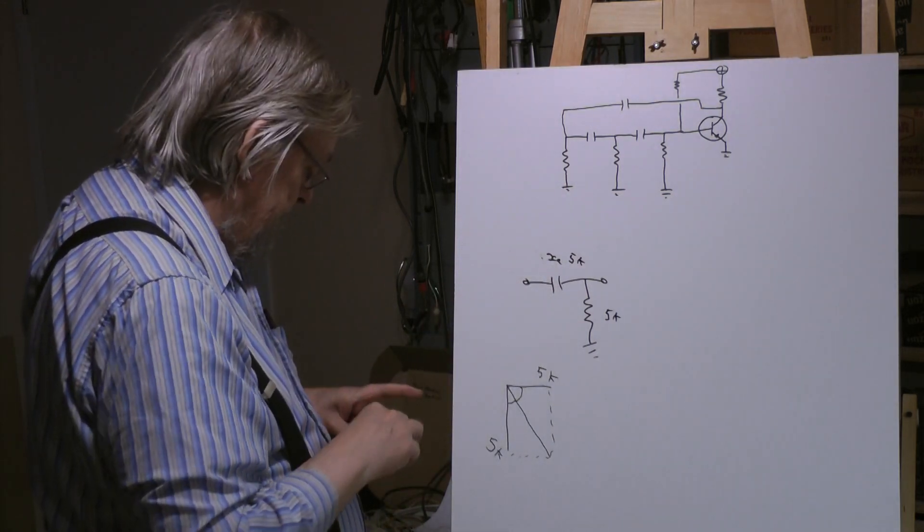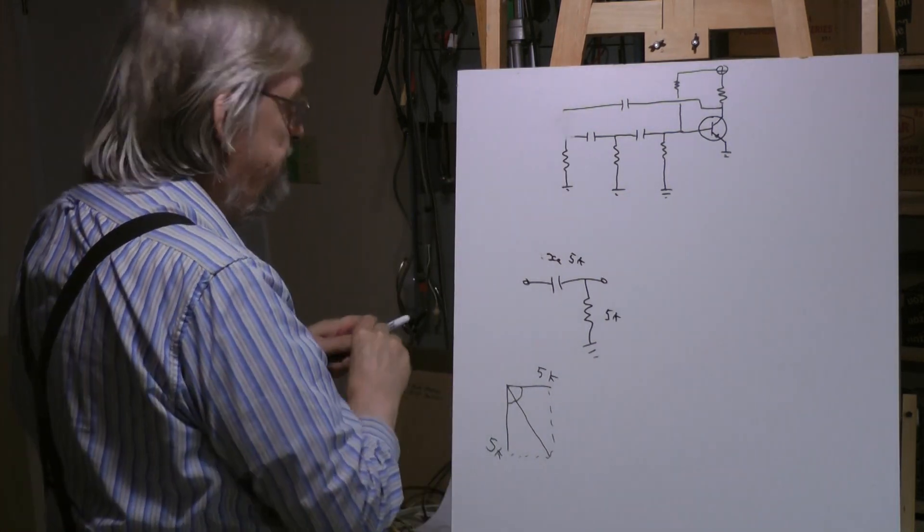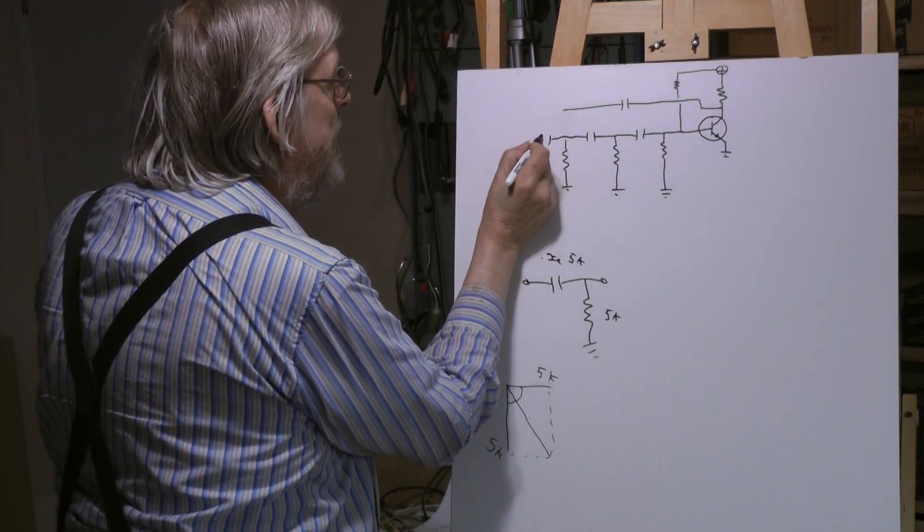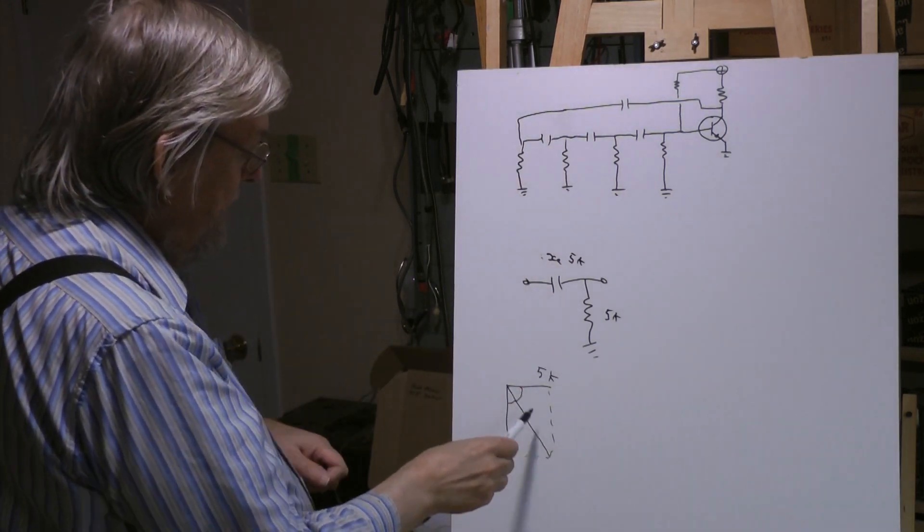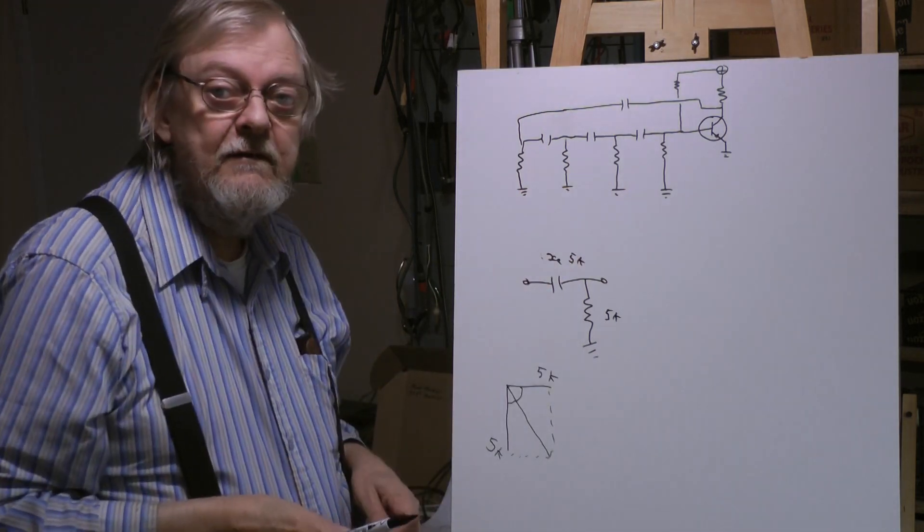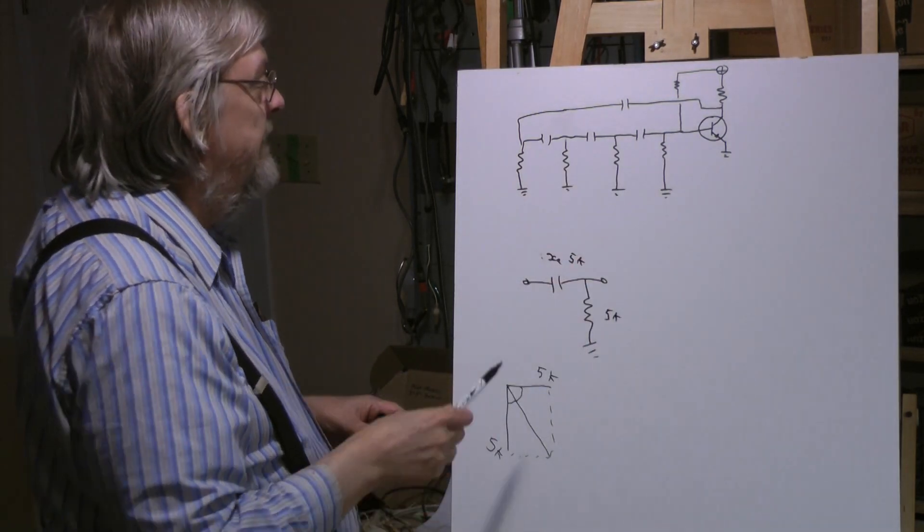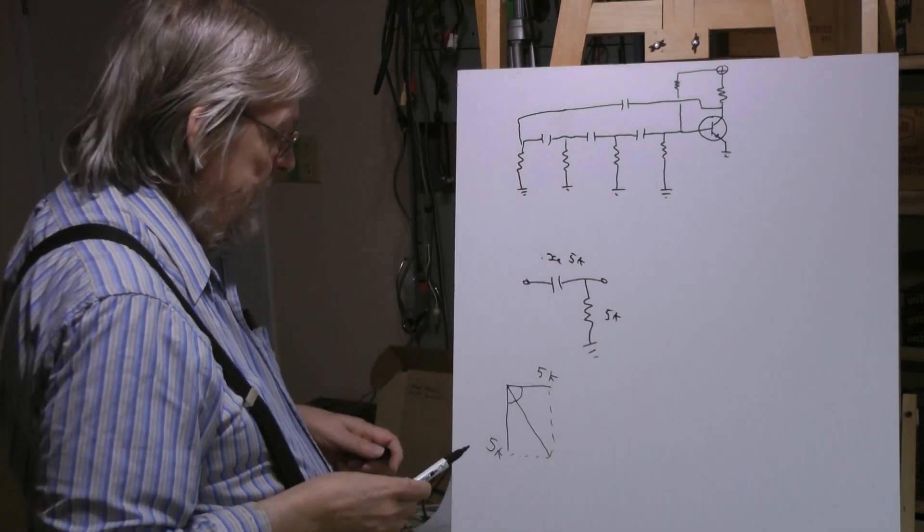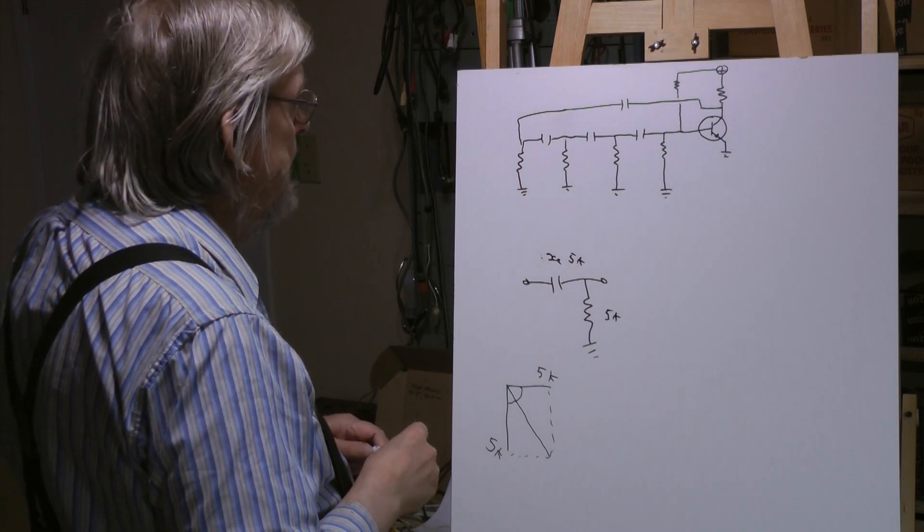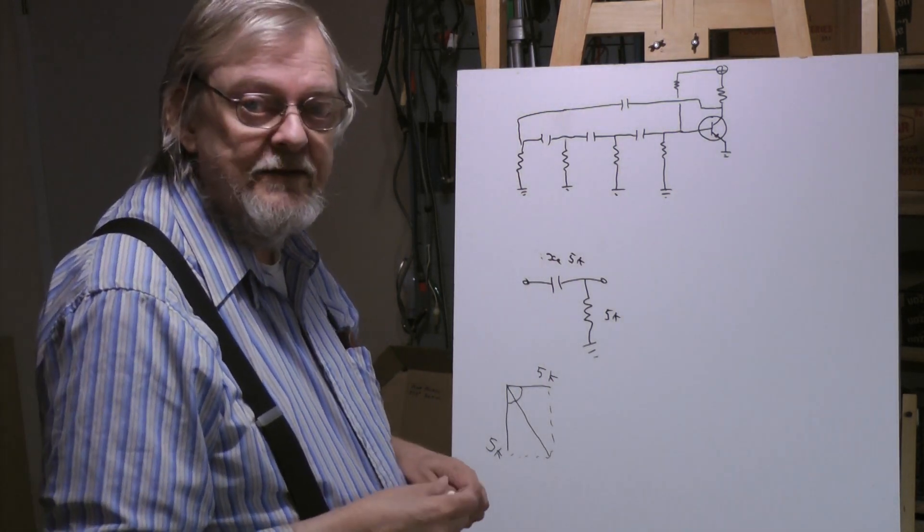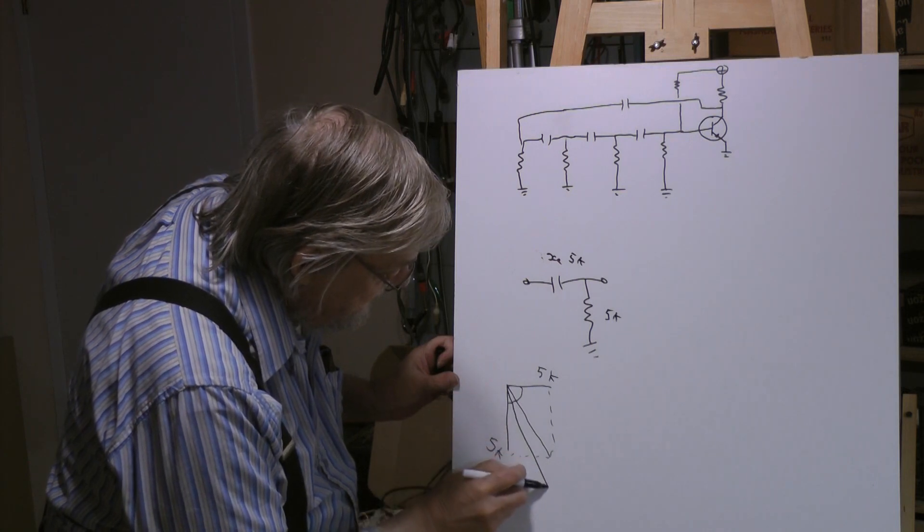Now if you change that to having four of these, you would satisfy this because 45 times 4 is 180 right, and that gives you your total 360. The only difference between 3 and 4 is going to be the actual frequency because it's the frequency that determines the reactance. So normally people want 3, they don't want 4, you save a capacitor and a resistor.